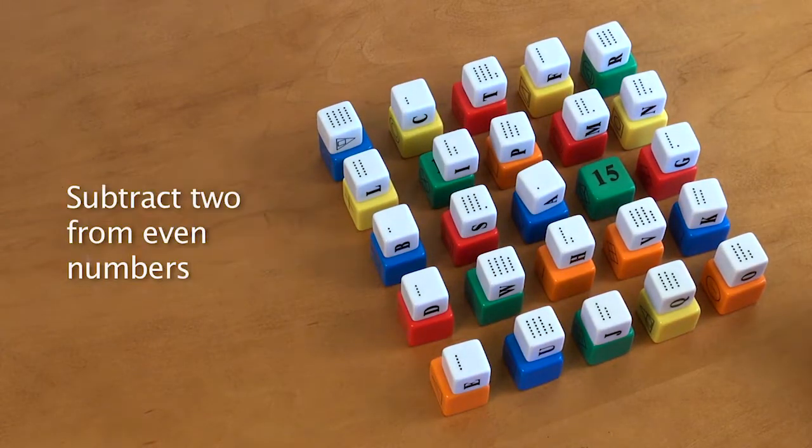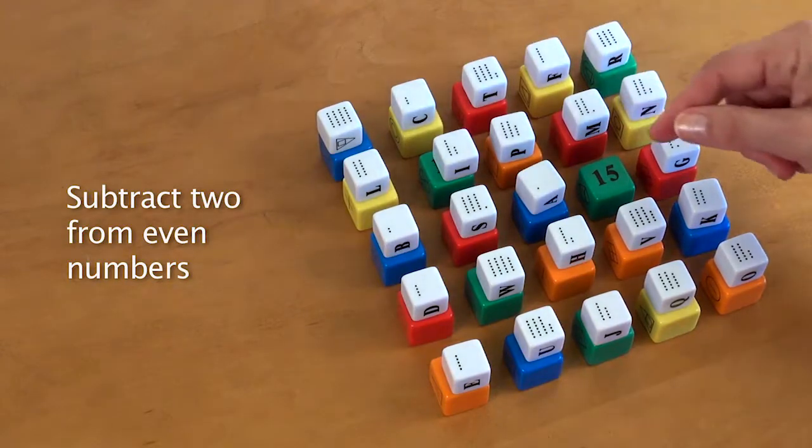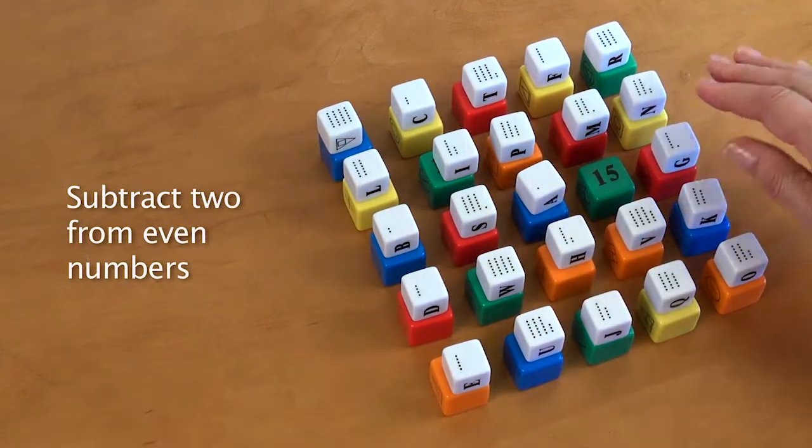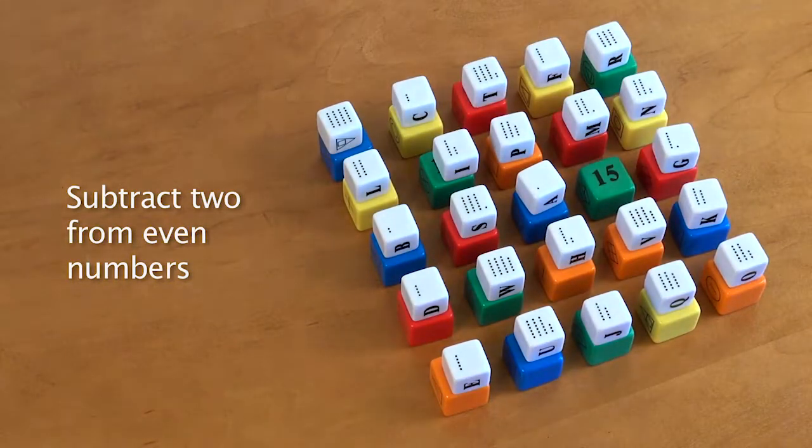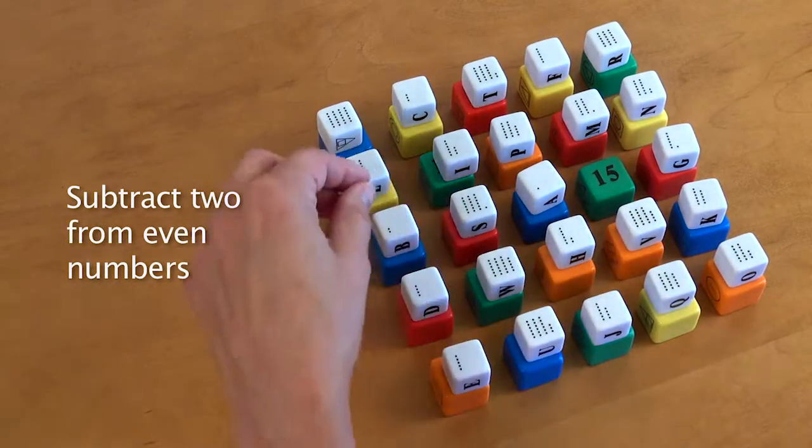But I'm going to add a brain load challenge to myself now. I'm going to move these in order, but I'm not going to call out the number I'm moving. So that was just a three. Instead, every time I come to an even number, I'm going to call out that number minus two.